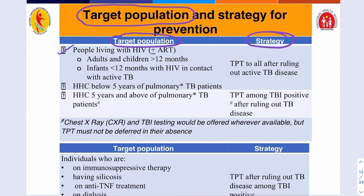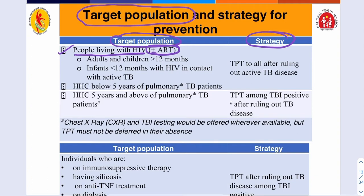Among the target population, there are people living with HIV — human immunodeficiency virus causing AIDS. They may or may not be on ART, which means antiretroviral therapy. Adults and children of 12 months of age and above, and infants less than 12 months with HIV in contact with active tuberculosis are included in this group.